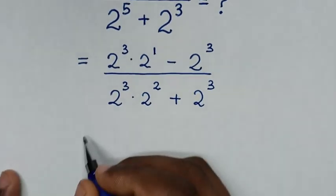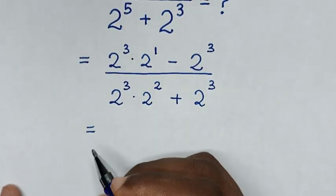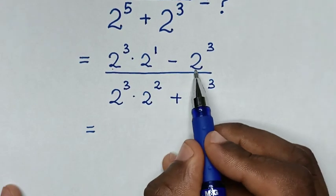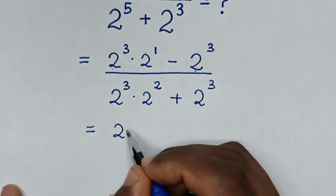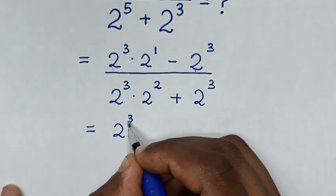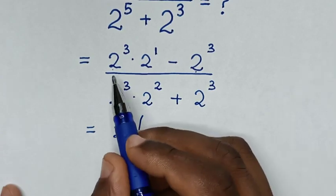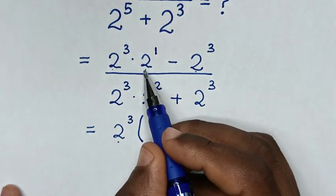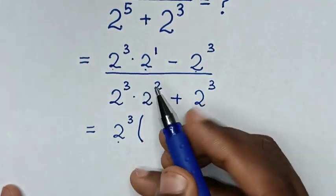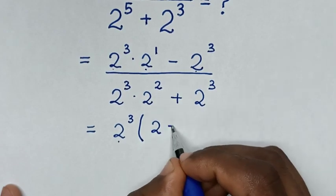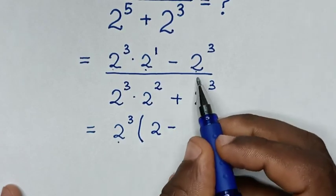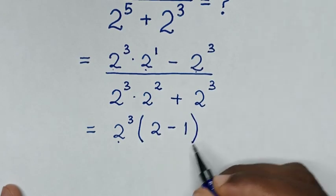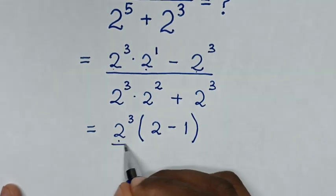In the next step, from the numerator, 2 power of 3 is common. So we take 2 power of 3 out of the bracket. Then this divided by this is 2 power of 1, whereas 2 power of 1 is the same as 2. Then, minus 2 power of 3 divided by 2 power of 3 is 1, closing the bracket.